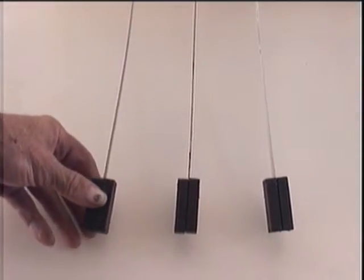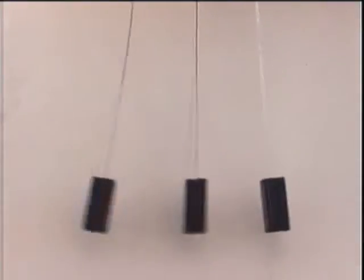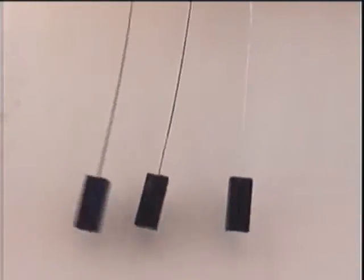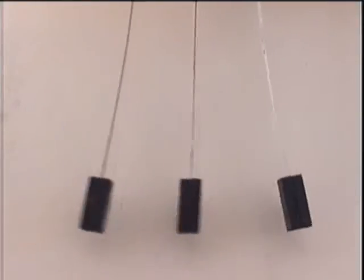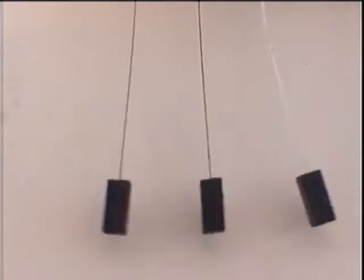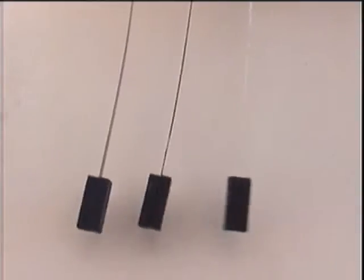When the left side pendulum falls, it causes the right side pendulum to rise to the same height the left pendulum had fallen from. At the same time, the falling left side pendulum also moves the middle pendulum a certain distance.